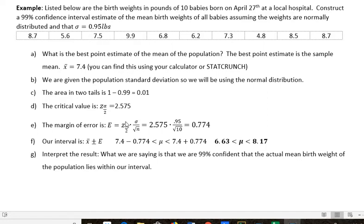Margin of error is the critical z-score times the standard deviation over the square root of n. So our critical score value was 2.575, the standard deviation is 0.95, and n was 10 different births, so the square root of 10. If you complete that calculation, you get 0.774. That's the margin of error.